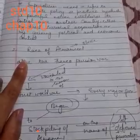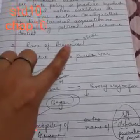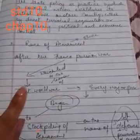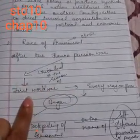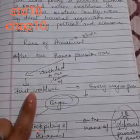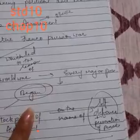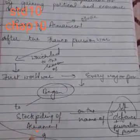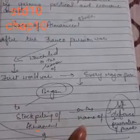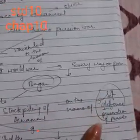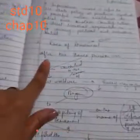The second point is the race of armament. Armament means weapons (hathyaar). After the Franco-Prussian war, which laid the groundwork for the First World War, every major country began stockpiling armaments. Stockpiling means gathering together (ikathe karna), on the name of self-defense or preservation of peace. That is called the race of armament.